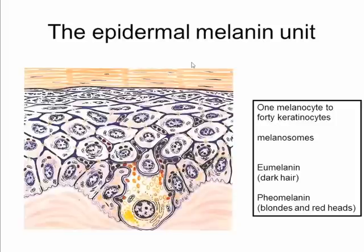Another thing to mention about keratinocytes is that they are linked in with melanocytes. The melanocytes are the pigment-producing cells — they produce melanin, packaged in melanosomes, and the melanocyte distributes the melanosomes to keratinocytes in the epidermal melanin unit.